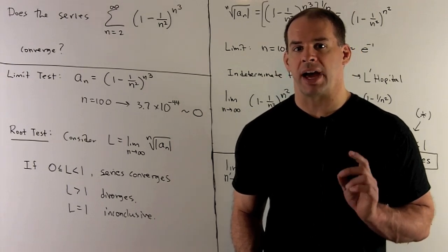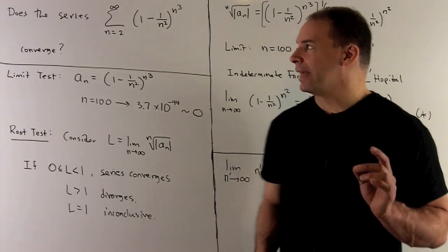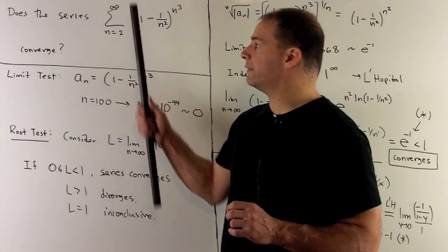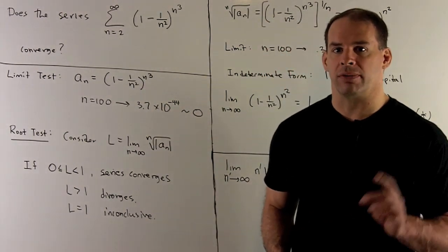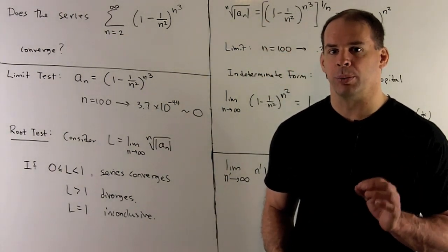Does the following series converge or diverge? We have the sum as n goes from 2 to infinity of (1 - 1/n²) raised to the n³ power.